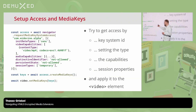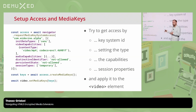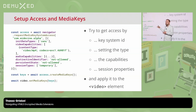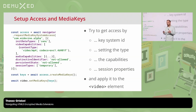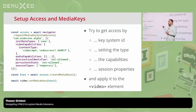There are also additional properties around the CDM session type. You can request distinctive identifiers if needed, or more interestingly, use persistent state and persistent licenses, which allows you to pre-cache your DRM licenses and potentially achieve faster startup times. Once you have all of this in place, you call access.createMediaKeys, apply it to the video element, and you're done.